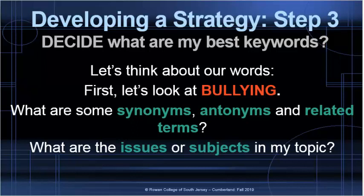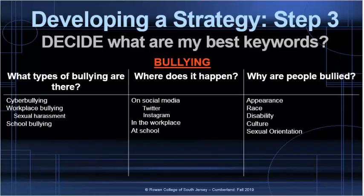Let's identify some more keywords — asking questions can help us with that. Our questions in this case will be: what types of bullying are there, where does it happen, and why are people bullied? For types of bullying, cyberbullying is one, and we also have workplace bullying, and within that we can include sexual harassment, and we have school bullying as well.